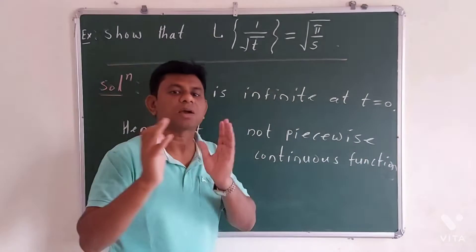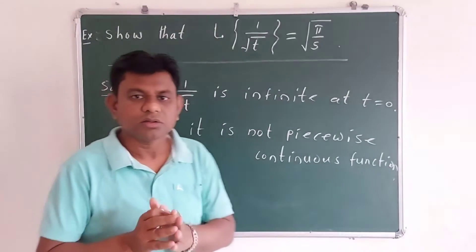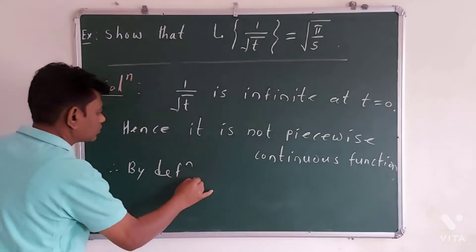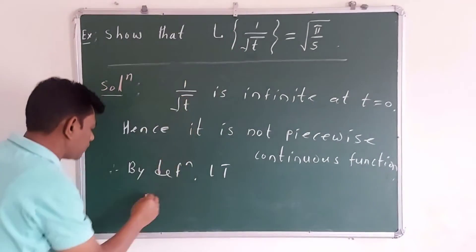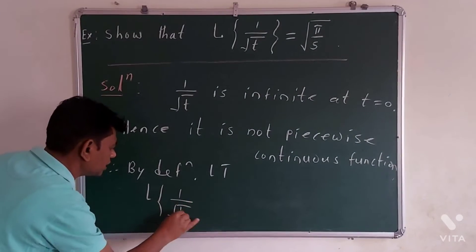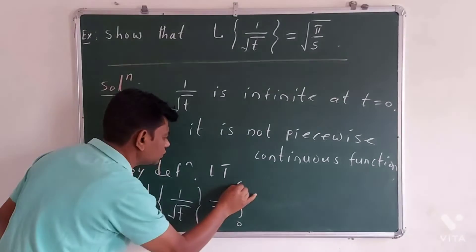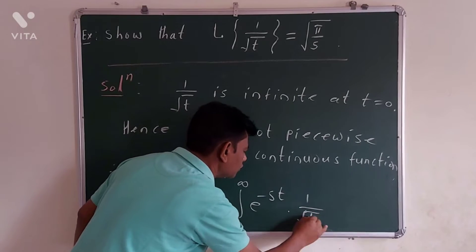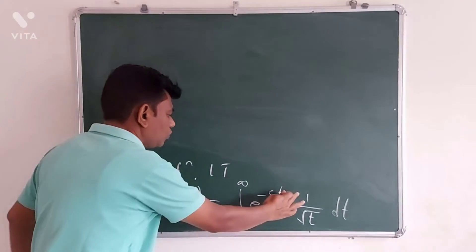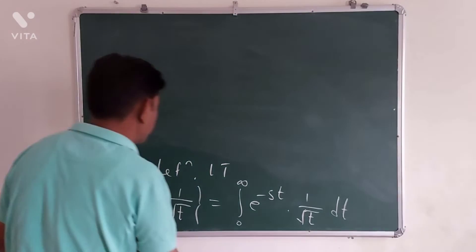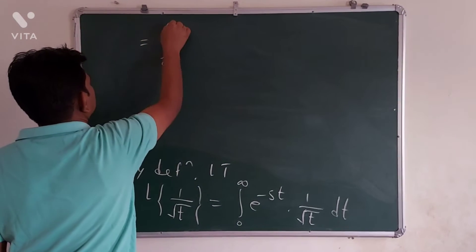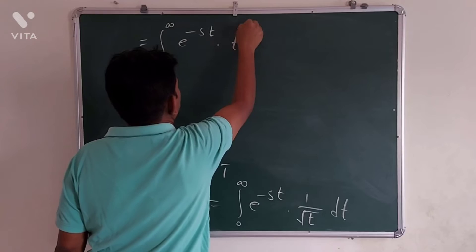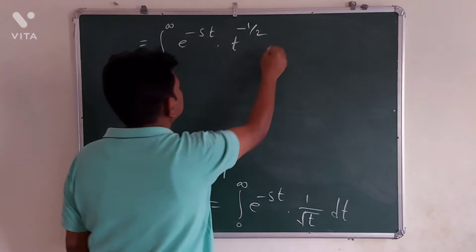But its Laplace transform exists. By definition of Laplace transform, the Laplace transform of 1 over root t is equal to the integration from 0 to infinity of e to the power minus st times 1 over root t dt. Now, 1 over root t means t to the power minus 1 by 2, so this equals the integration from 0 to infinity of e to the power minus st times t to the power minus 1 by 2 dt.